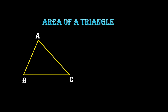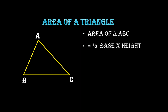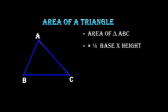In triangle ABC, let's discuss how we get the area. Any one of the sides can be taken as the base — it may be AB, BC, or AC. When we take AB as the base, the height is the altitude or perpendicular drawn from the opposite vertex C. So CD is the height, and the area is half of AB into CD.